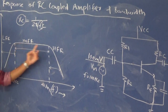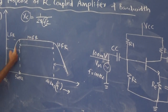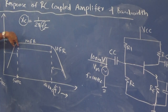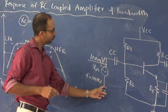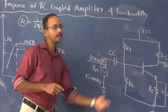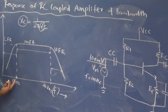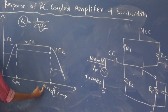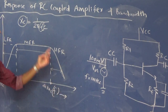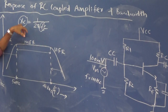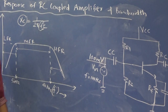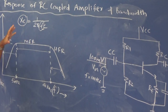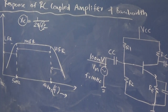In the medium frequency range, when we increase frequency above 50 Hz the reactance decreases, so more signal comes from the input side to the amplifier and the gain increases. But when we reach 20 kHz, which is the high frequency range, the reactance becomes very small and the loading effect occurs, causing gain to decrease again. Due to these two reasons, in the mid frequency range the gain is maximum and constant.